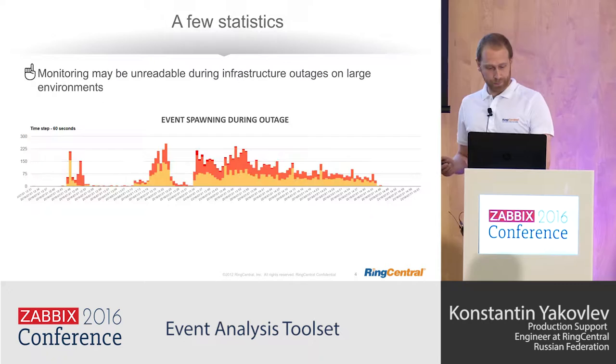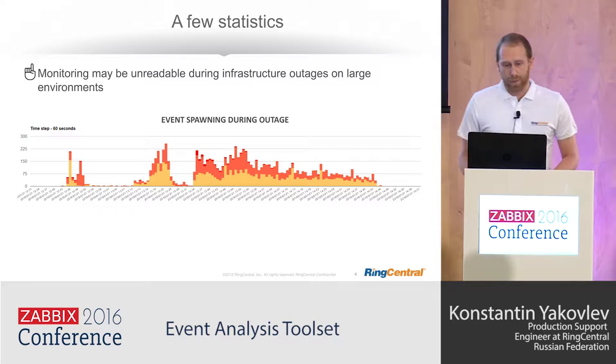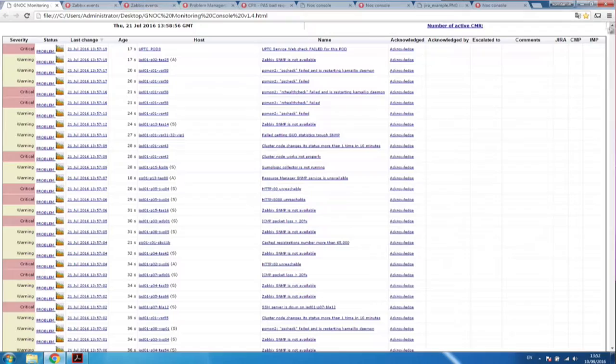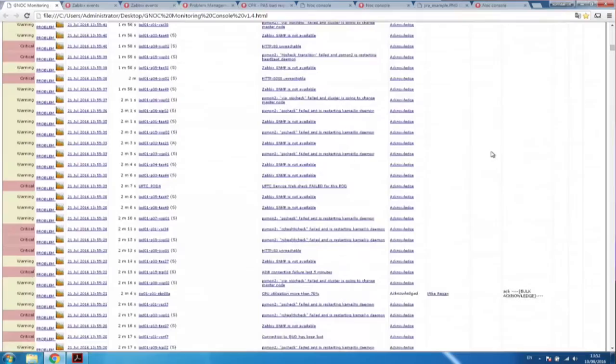But I'd like to bring you a few statistics first. So this is an outage — a network outage particularly. Every bar here is a quantity of events spawned during a one-minute interval. Let's see what an operator feels about it. This is our old solution. As our architecture spans several Zabbix instances, such a tool is a must to have all currently active events on a single page. And you may see that it's kind of a challenging goal to find the cause of an outage from hundreds of active alarms.